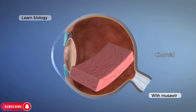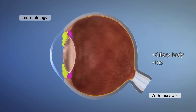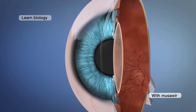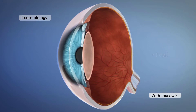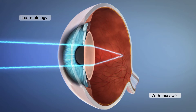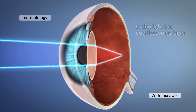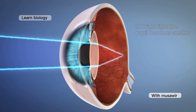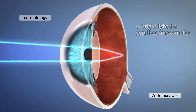The choroid, the middle layer, is vascular and continues with the ciliary body and with the iris in front of the eye. The color of the eye refers to the color of the iris. In the middle of the iris, there is a small opening called the pupil. Muscles of the iris adjust the size of the pupil to regulate the amount of light that enters the eye. In dim light, the pupil becomes large so that more light can enter the eye. In bright light, the pupil becomes smaller so that less light enters the eye.